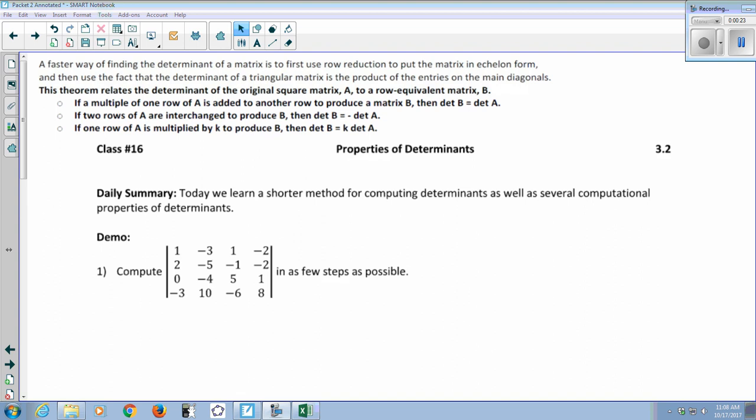So the theorem that relates the determinant of the original matrix to a row equivalent matrix B, it says that if you do a multiple of one row of A added to another row, then the determinants don't change. So that move that we do most frequently doesn't change the determinant.